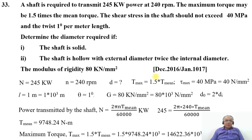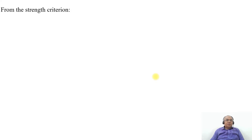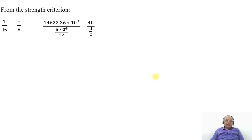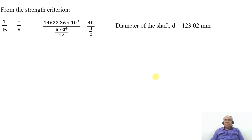For the solid shaft using the strength criterion, T/J = τ/R. Substituting T = 14622.36 × 10³, J = πd⁴/32, and τ = 40 N/mm², R = d/2. On cross multiplication and simplification, the diameter of the solid shaft d = 123.02 mm.